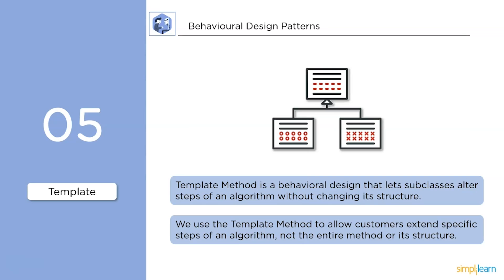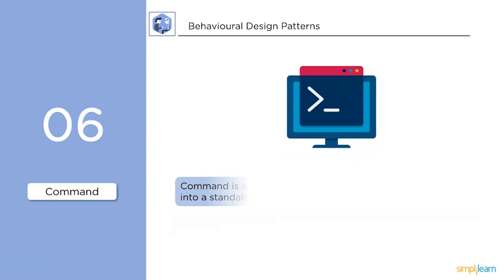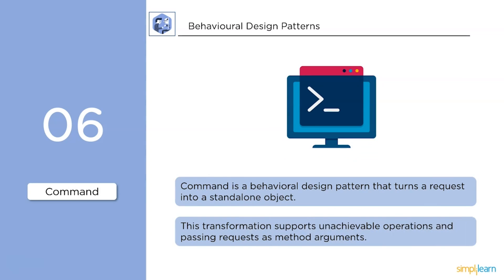The Command pattern is a behavioral design pattern that turns a request into a standalone object. This transformation supports undoable operations and passing requests as method arguments.